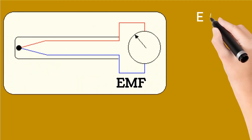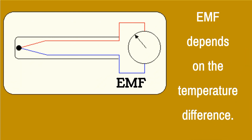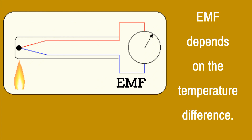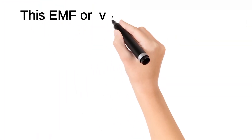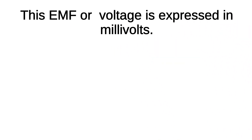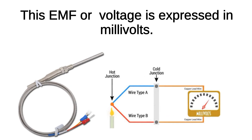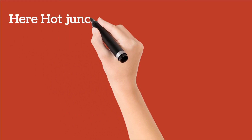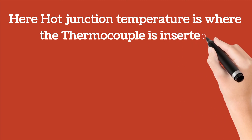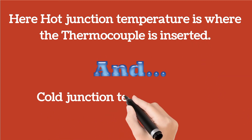The EMF depends on the temperature difference between the hot junction and the cold junction. As shown in the image, EMF increases with increasing temperature. The EMF or voltage is measured in millivolts. The hot junction is the point where the thermocouple is inserted, and the cold junction is at the environment.